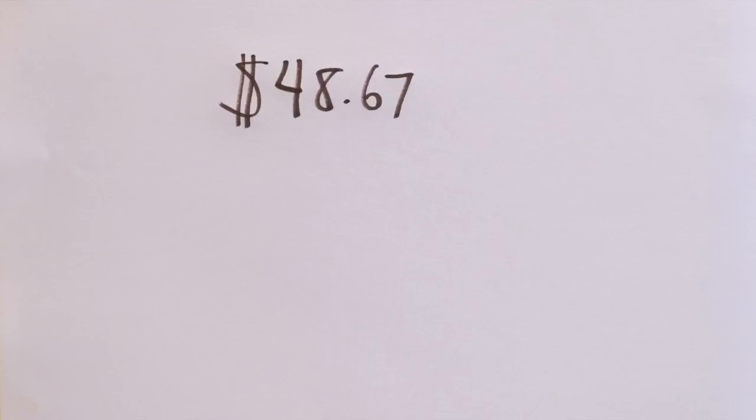Here's another example. Say you have a bill of $48.67. If you want, you can do the trick on the entire price. But since you're probably not going to tip to the penny, it's more convenient to just round the price to the nearest even dollar. Or in this case, $48.